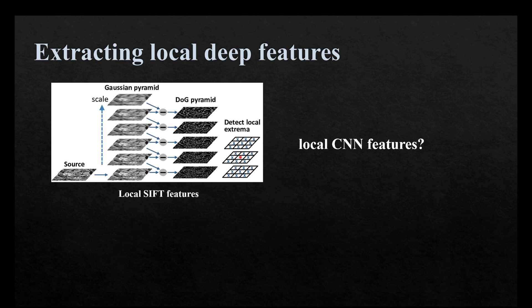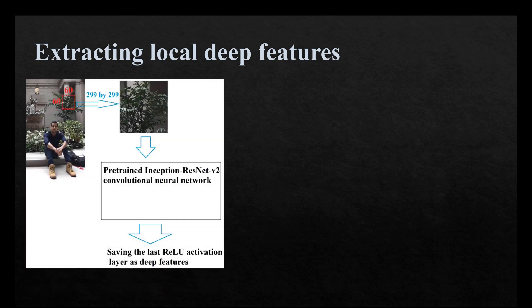To overcome this issue and extract local features from an image, different x and y coordinates of the image are first randomly generated. After generating these coordinates, the image content around each coordinate in a square shape of size 60 by 60 — with the coordinate being the center — is extracted. Therefore, many small images are made from the main image, each with an x and y coordinate associated with it. Those small images are fed into the neural network to extract their deep features. For example, if one image is divided into 10 small images, after extracting features there will be 10 features with 10 x and y coordinates appended to them.